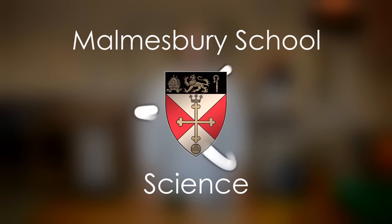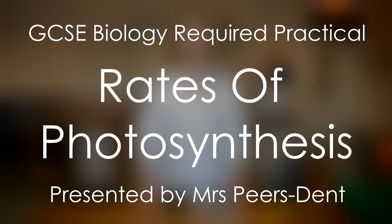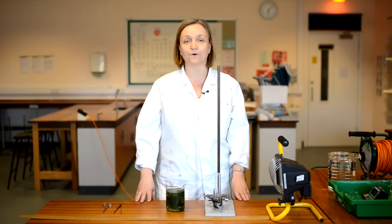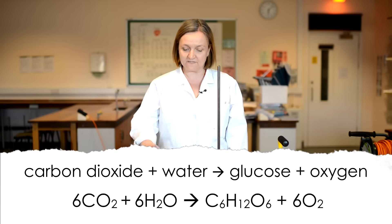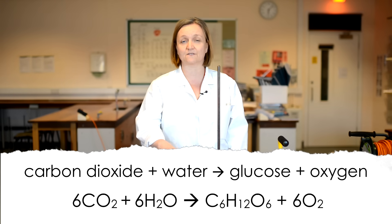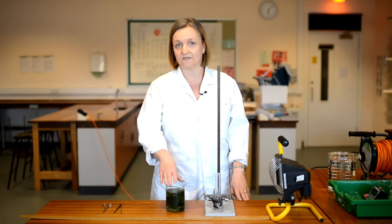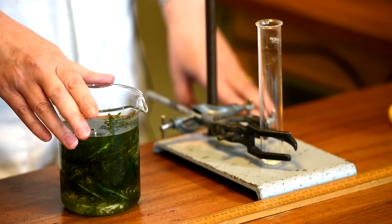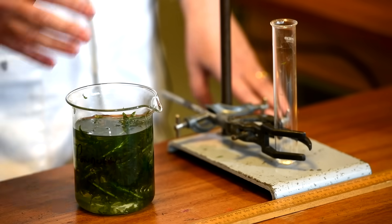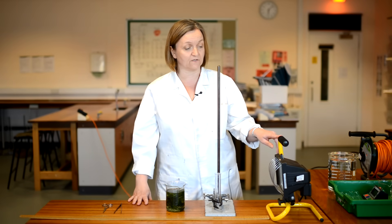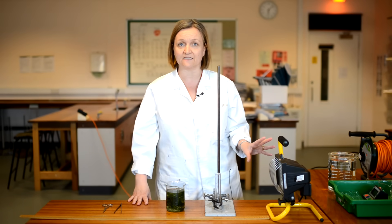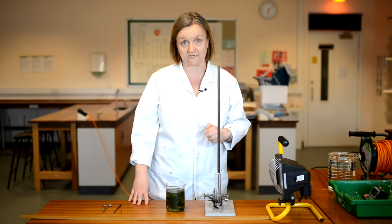So, this is the required practical for photosynthesis. Now, I'm sure you already know the word and formula equation for this vital biological process. And this is, of course, when green plants use carbon dioxide and water in the presence of light energy to produce glucose and oxygen. Now, in this required practical, you need to investigate how various different factors could affect the rate of photosynthesis. And so we're going to look at how we can change light intensity and how that affects the rate in this particular practical.